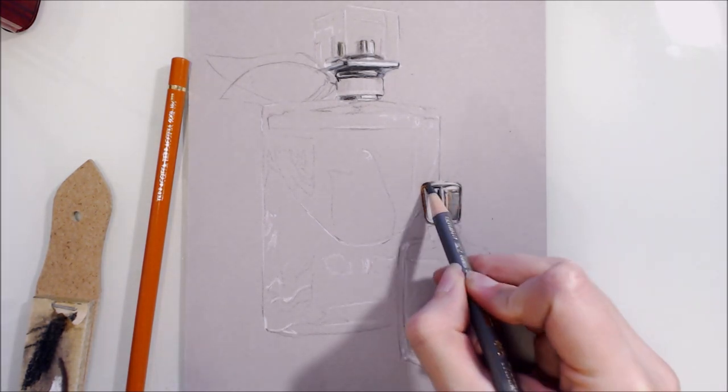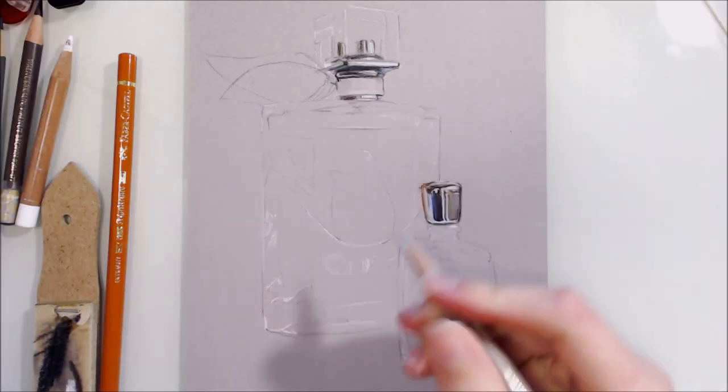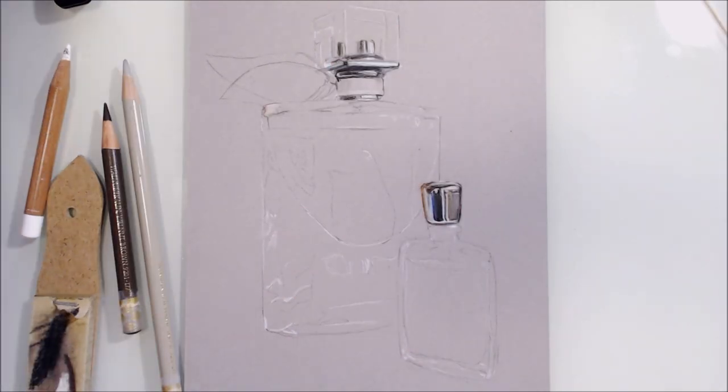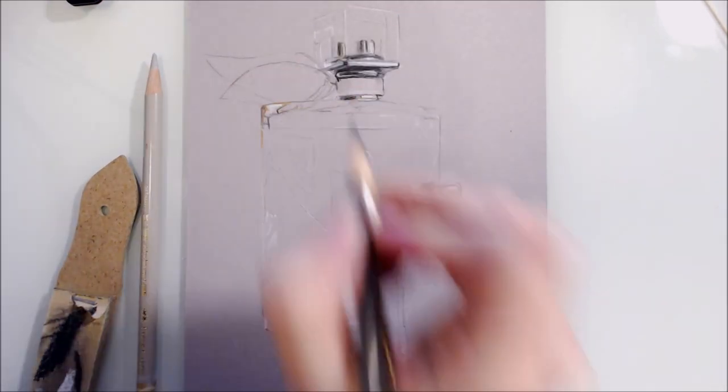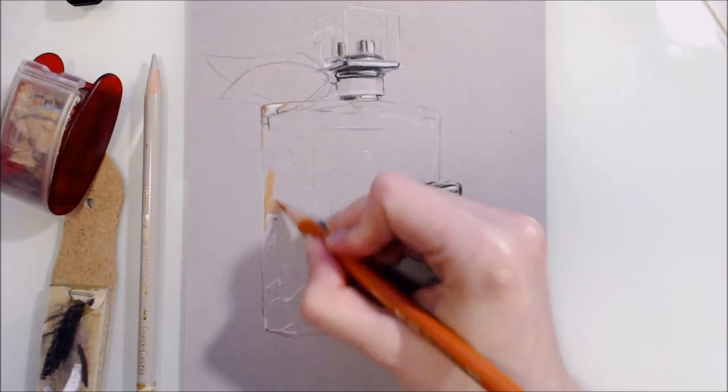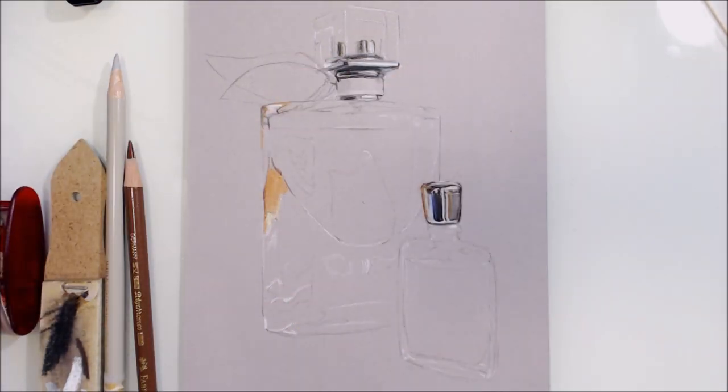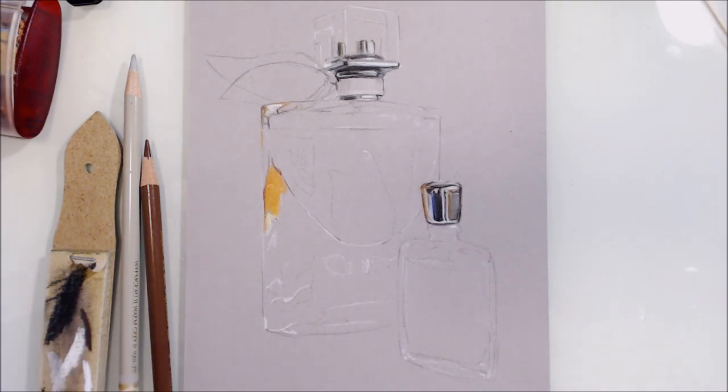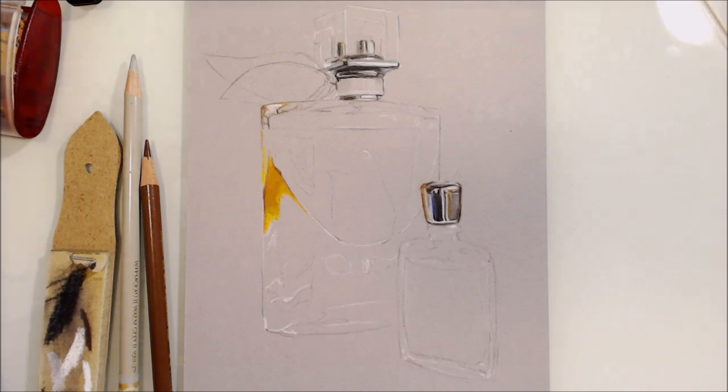I tackle glass in a very similar way to metal. The difference is that there's internal reflections to consider. Keep an eye out for abstract shapes that you see, and these shapes might overlap or blend together or fade out entirely. Contrasts are often strongest where there's a thickness to the glass, like at the edges, or where the glass changes shape.